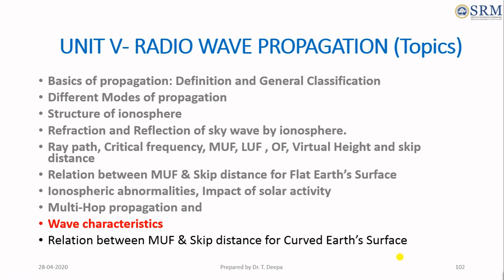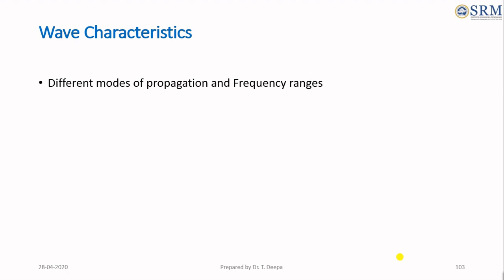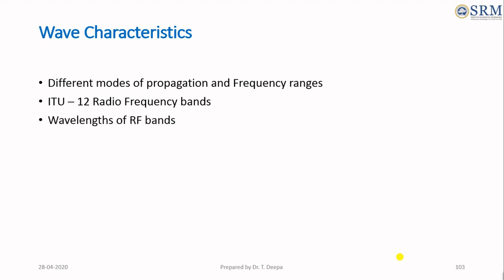In this class, we are going to see about wave characteristics — how radio waves are used in different modes of propagation, frequency ranges, and the 12 radio frequency bands. These 12 frequency bands are allocated by ITU, the International Telecommunication Union, and we are going to see their wavelengths and applications.